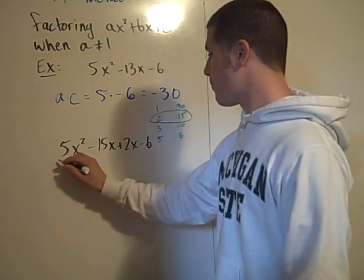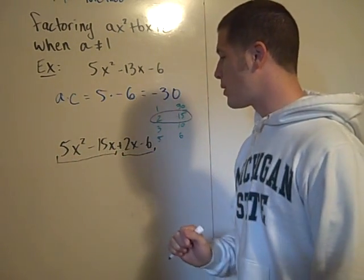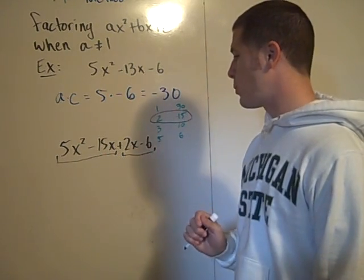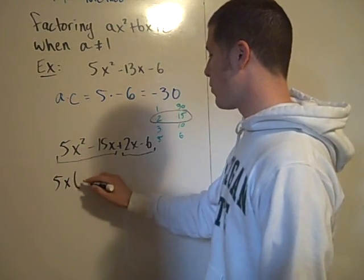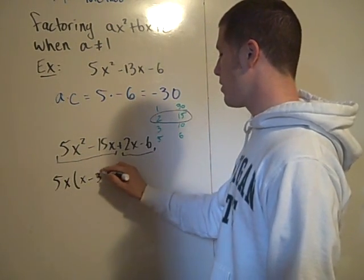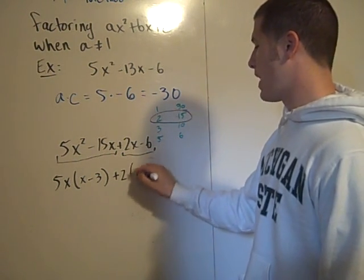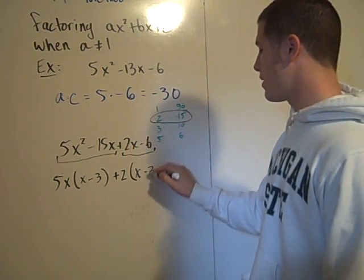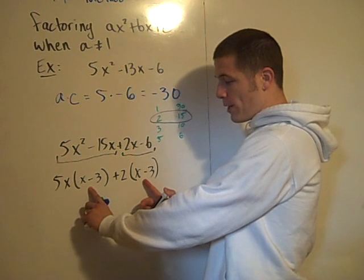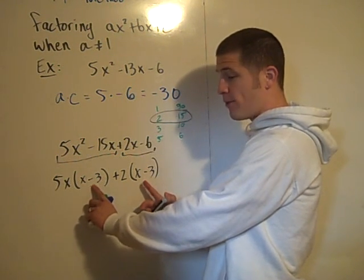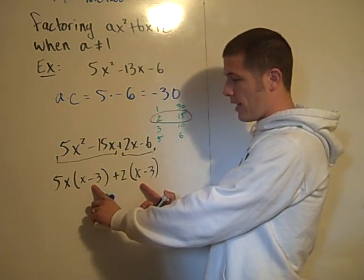So at this point you group the first two and you group the last two and you pull out the greatest common factor between these two terms. So here the greatest common factor is a 5x and I'm left with an x - 3, and here the greatest common factor is a positive 2 and I'm left with an x - 3. You will always be left with this pair of binomials that are exactly the same when you're doing this correctly. If you don't have this pair that is exactly the same you've done it wrong and you should go back and recheck your work.